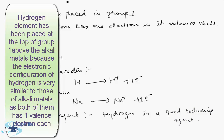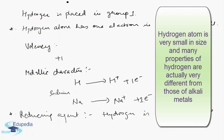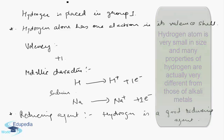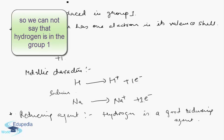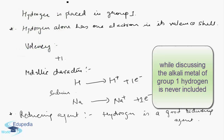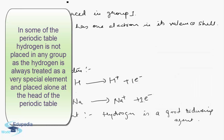Hydrogen has been placed at the top of Group 1 above the alkali metals because its electronic configuration is very similar to those of alkali metals — both have one valence electron. However, the hydrogen atom is very small in size, and many of its properties are actually very different from those of alkali metals. So when discussing alkali metals of Group 1, hydrogen is never included, and in some periodic tables hydrogen is not placed in any group, being treated as a special element placed alone at the head of the periodic table.